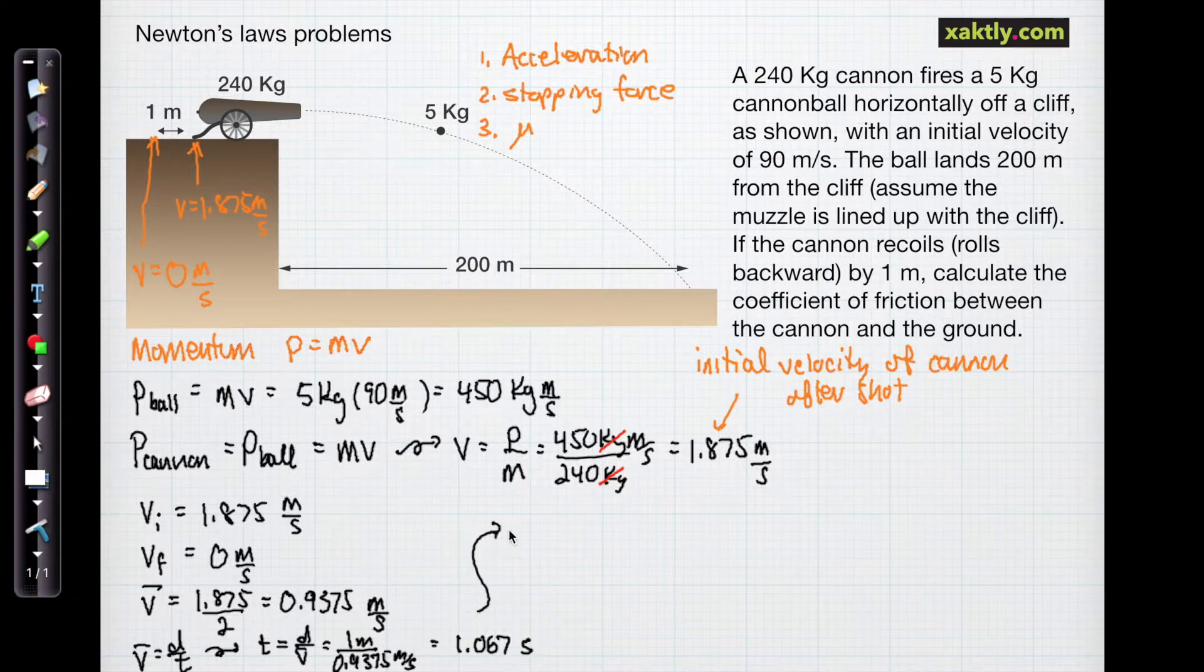Now we're trying ultimately to get to a force, so let's calculate the acceleration of the cannon as it slows down. That's the change in velocity over the change in time. The change in velocity is just going to be that 1.875 meters per second, because it goes to 0 from there, so that's delta V.